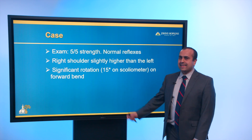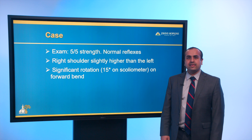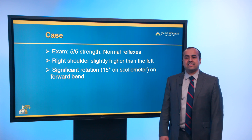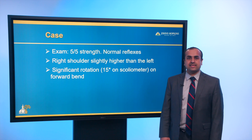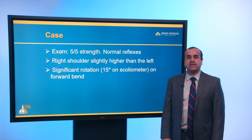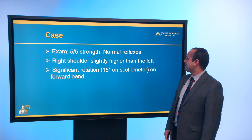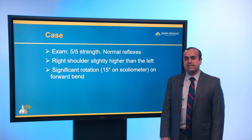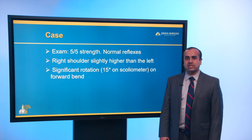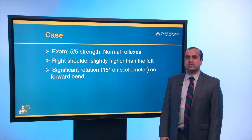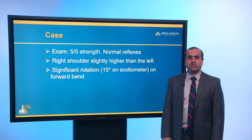On exam, she had five out of five strength and normal reflexes. As part of my reflex exam, I always check abdominal reflexes just to make sure there are no spinal cord issues. Her right shoulder was slightly higher than the left, and she actually had significant rotation on exam — about 15 degrees on scoliometer with a forward bend test.